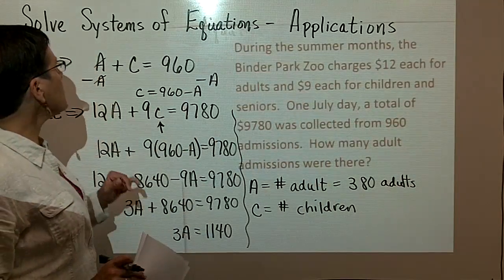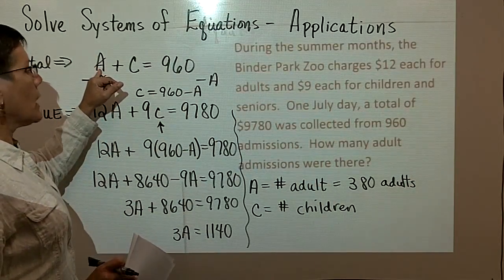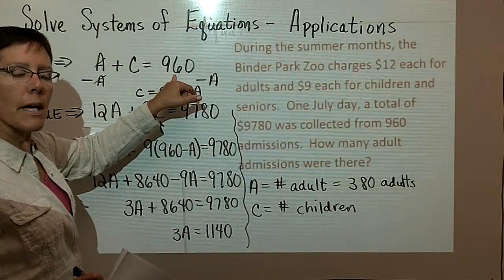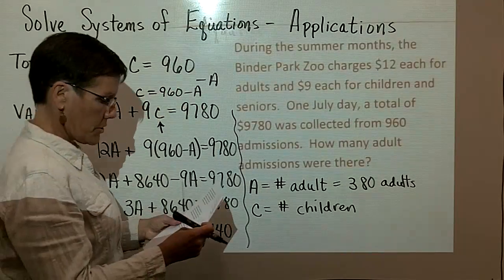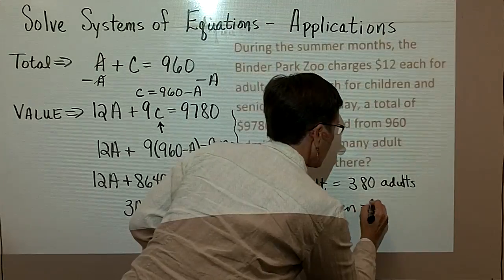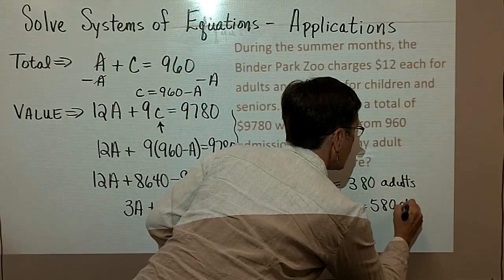If I wanted to know the number of children, I would go in here and put the 380 in and subtract that from 960 to find out the number of children. That turns out to be 580 children.